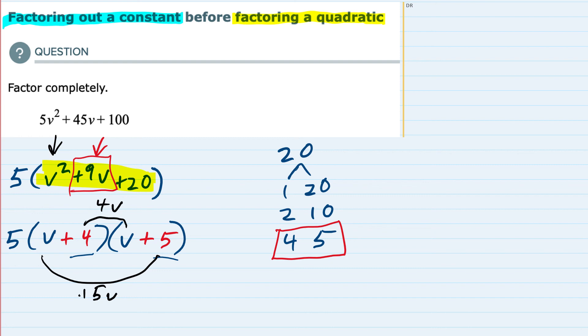Both of those are positive. Adding them up does give me the 9v. So that part checks. And then lastly, positive 4 times a positive 5 does give me the 20.